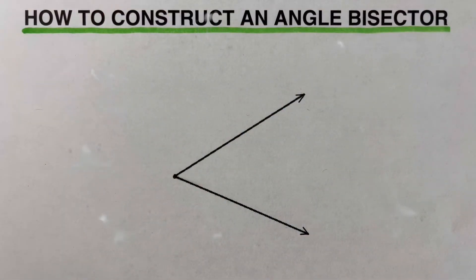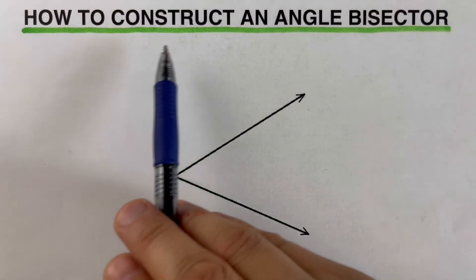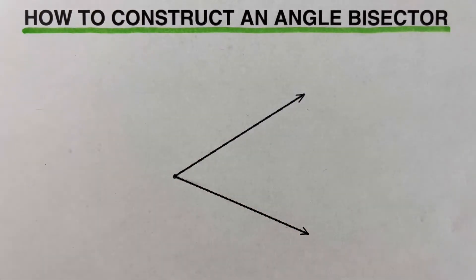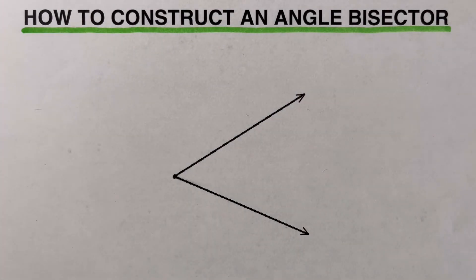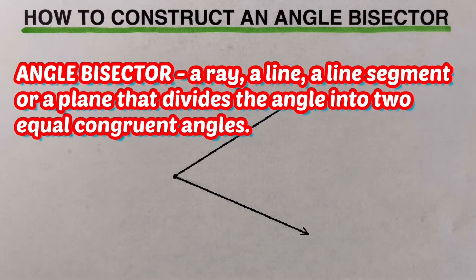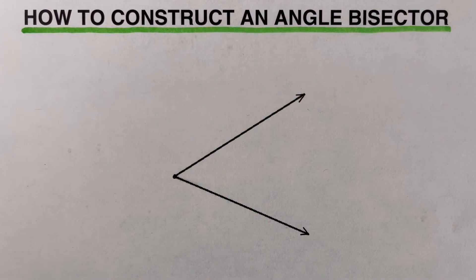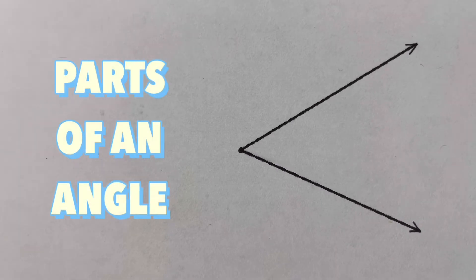Hello everyone. In this video I'm going to show you how to construct an angle bisector using a compass and a straight edge — in this case we're going to use a ruler. Before we go over the steps, let's remember that an angle bisector is a line, a ray, or a line segment that divides an angle into two equal congruent angles.